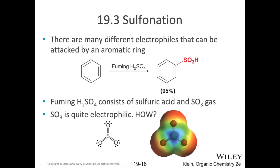Next up, we have sulfonation. Here we take our benzene and react it with what's called fuming sulfuric acid, which is basically sulfuric acid mixed with sulfur trioxide. We get this sulfonic acid group. When this is protonated, it's called a sulfonic acid; when it's deprotonated and we have an ion, it's the sulfonate ion. Here we have a sulfonic acid.